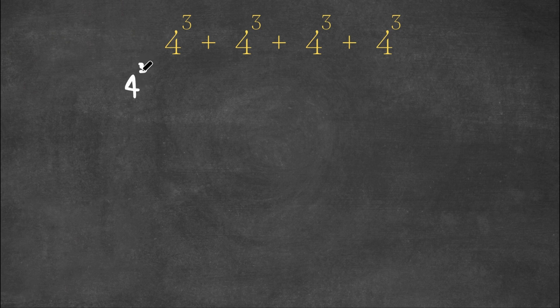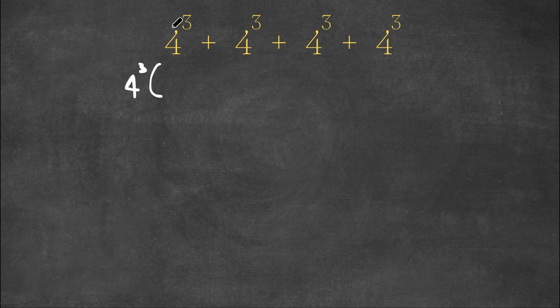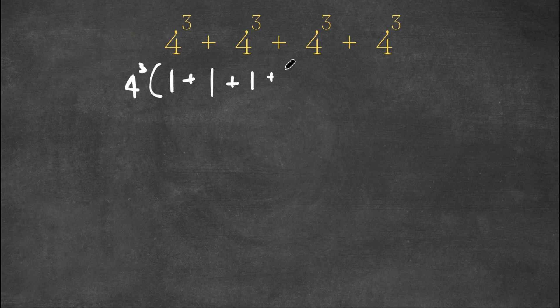So if I factor out 4 to the power of 3, I get 4 to the power of 3 times. Now 4 to the power of 3 divided by 4 to the power of 3 is simply 1, because anything divided by itself is 1. So the same thing over here, 4 to the power of 3 divided by 4 to the power of 3 is 1. Same thing here, 1 and plus 1.